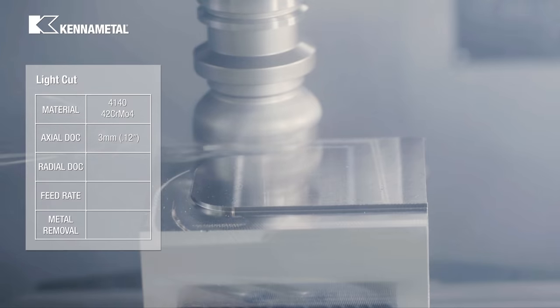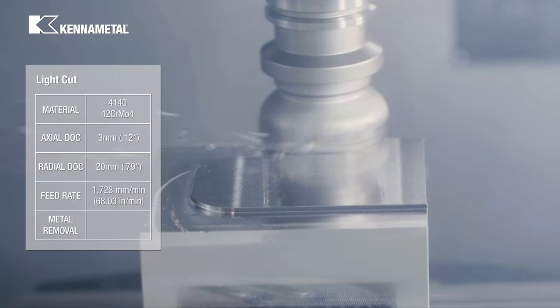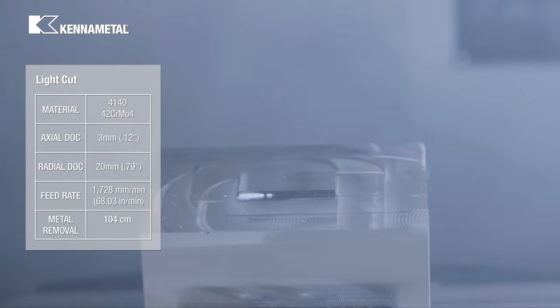We should take a look at the metal removal rate that we achieved with this light cut. With a 3 millimeter depth of cut, 20 millimeter radial depth of cut, and 1728 millimeters per minute feed rate, we achieved a metal removal of 104 cubic centimeters.